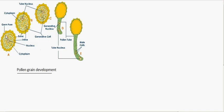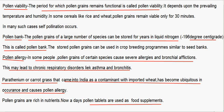Here is the pollen grain — these are the germ pores, this is the cytoplasm, the tube nucleus and the generative cell. The generative cell divides to form the two male gametes, and the vegetative cell provides nourishment for the developing pollen grain or the male gametes.